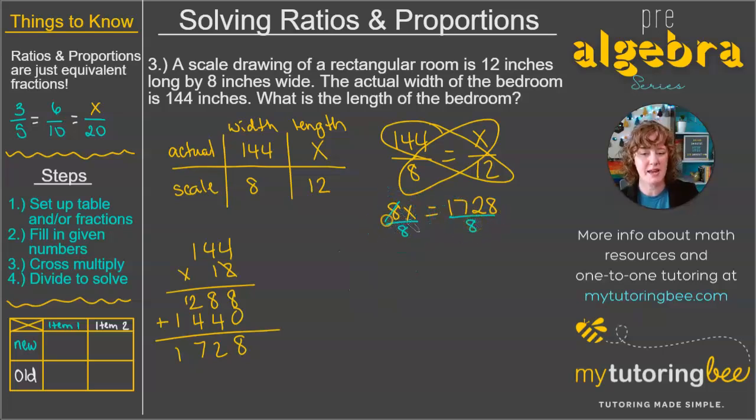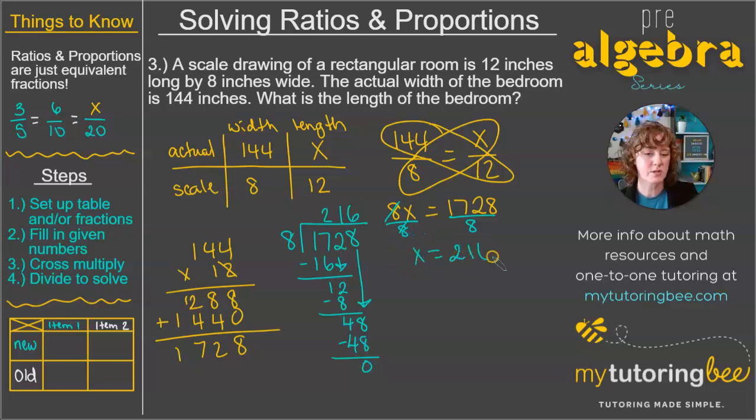And then for our last step, we're going to divide each side by 8. So those 8s will cancel out. So let's see what 1,728 divided by 8 gives us. So 8 can go into 17 twice. That's 16. And we bring down our 2. 8 can go into 12 once, and that gives us 8. And then when we subtract, we get 4. Bring down our 8. And then 8 can go into 48 six times. That does come out evenly for this one. So x equals 216, which means that the length of the room is 216 inches.